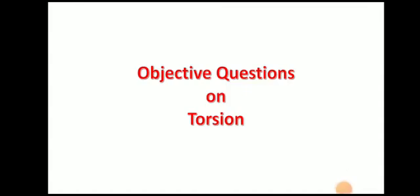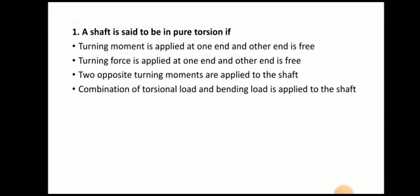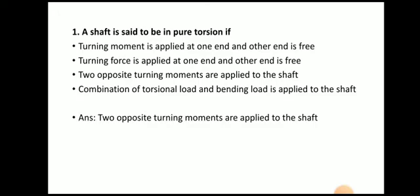In this video we will discuss objective questions on torsion. The very first question: a shaft is said to be in pure torsion if — the answer is two opposite turning moments are applied to the shaft. When two opposite turning moments are applied over the shaft, it is subjected to torsion.